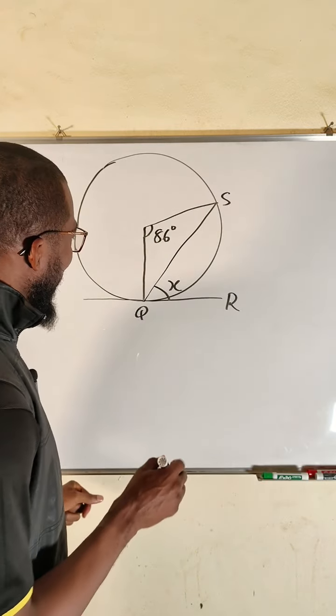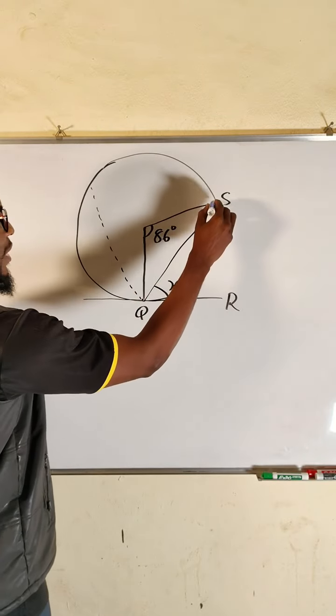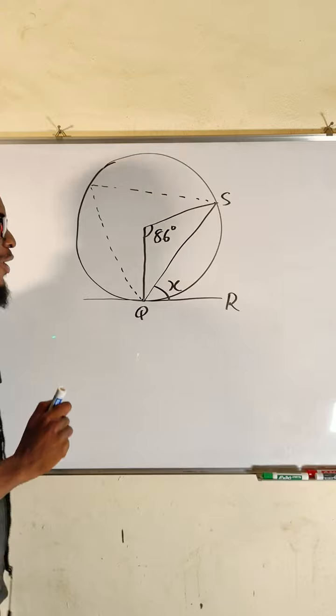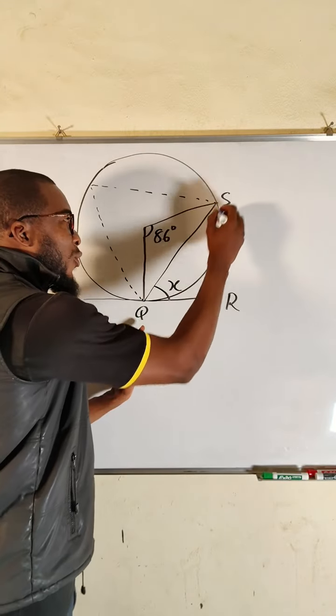So what I would be doing here is I would like to extend this point to the circumference, likewise extend this point to the circumference. Now, what can you remember about this angle subtended from the same chord? You can see we have a chord QS. Angles subtended from a chord to the center...